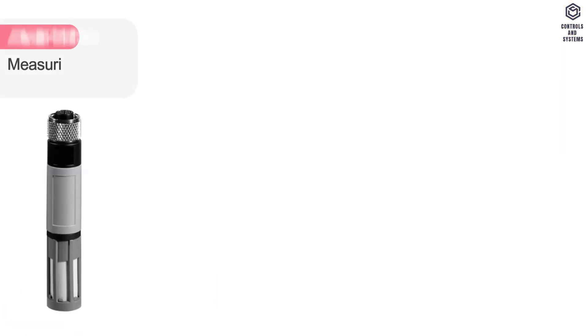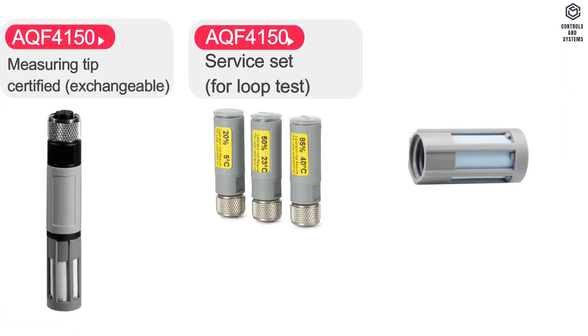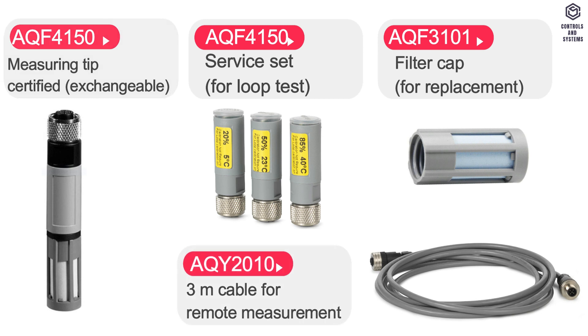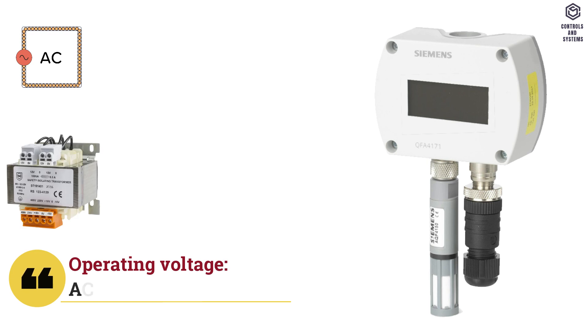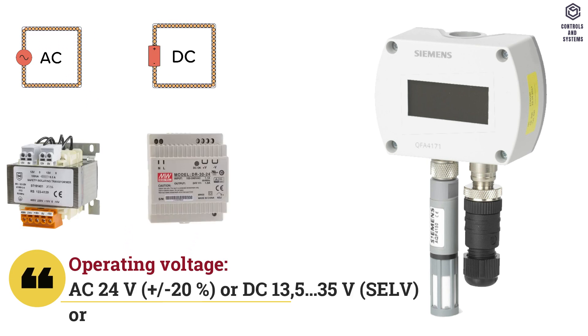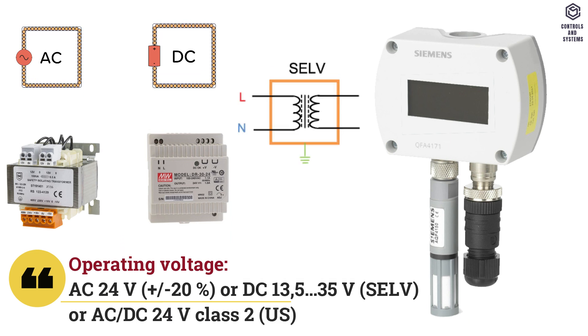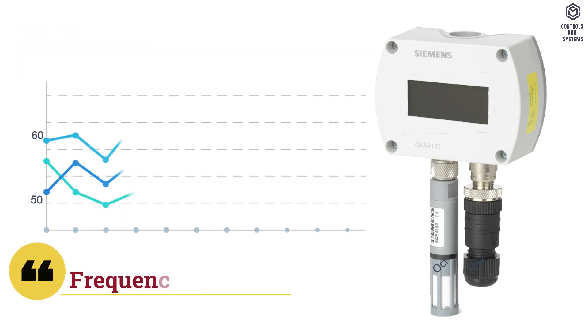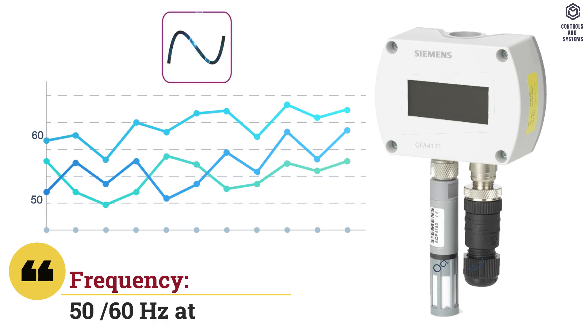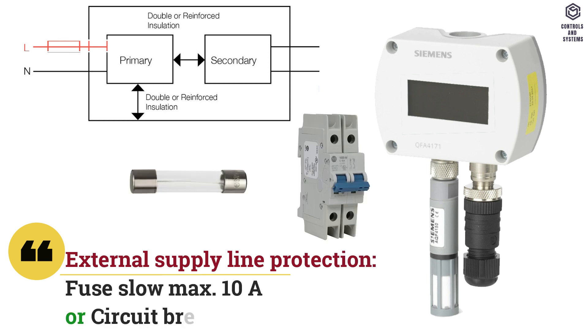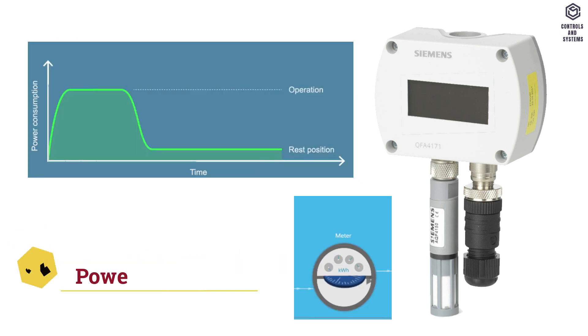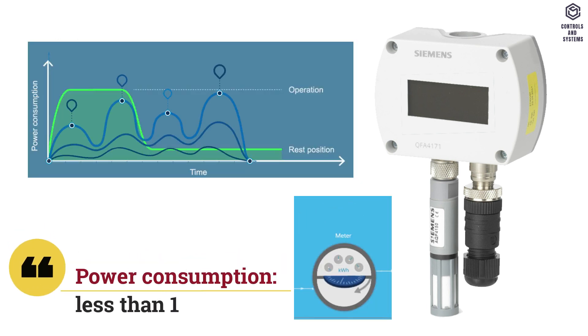Accessories: measuring tip certified, service set, filter cap and 3 m cable for remote measurement. Electrical data. Operating voltage is AC 24V plus or minus 20% or DC 13.5 to 35V SELV. Frequency is 50 or 60 Hz at AC 24V. External supply line protection: fuse slow maximum is 10 amps or circuit breaker maximum 13 amps. Power consumption is less than 1 VA.